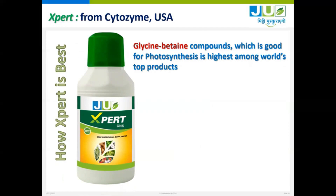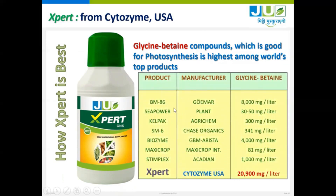EXPERT is best because it contains the highest percentage of glycine betaine, which is a compound good for photosynthesis in plants. Comparing products of different companies, EXPERT has the highest level of glycine betaine — around 21,000 mg per litre of product. So EXPERT contains the highest quantity of glycine betaine.